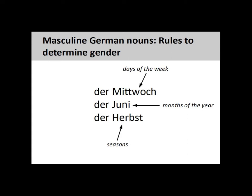Days of the week, such as 'Mittwoch' (Wednesday), and months of the year, such as 'Juni' (June), are masculine.